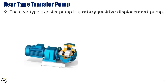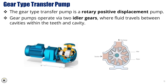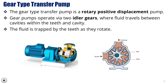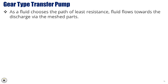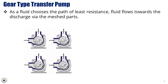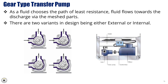Now let's look at the gear type transfer pump, which is another example of a rotary positive displacement pump. Fluid is moved using two intermeshing gears, typically referred to as the drive gear and the idler gear. As these gears rotate, they create cavities between the gear teeth and the casing. Fluid is drawn into these cavities on the suction side, carried around the outside of the gears, and then pushed out on the discharge side as the teeth mesh back together. This design provides a consistent and precise flow, making gear pumps ideal for handling clean, viscous fluids in applications requiring reliable delivery at steady pressure. There are two variants in design: external and internal.